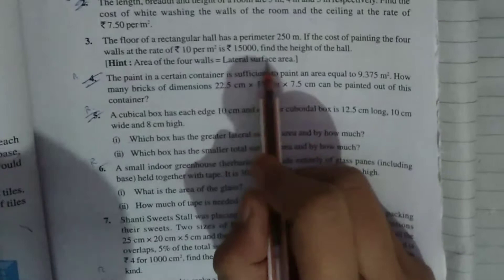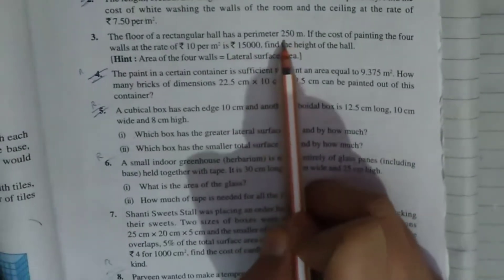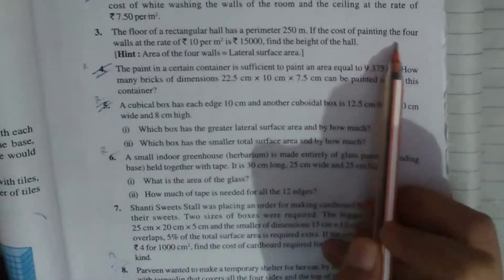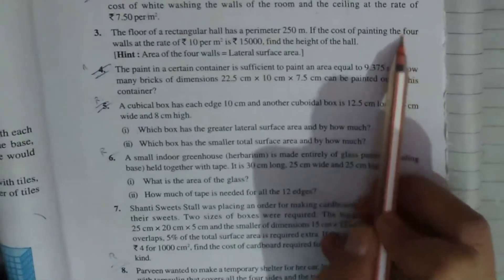In this question, perimeter is given which is 250 and we need to find the cost of painting the 4 walls. Let's get started.